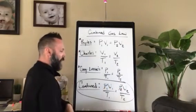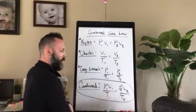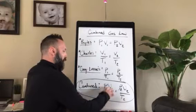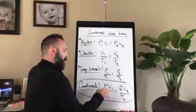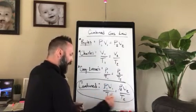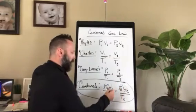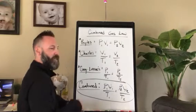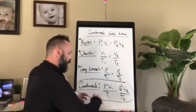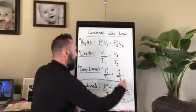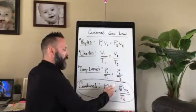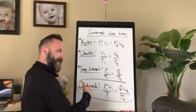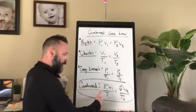If pressure is held constant, we're left with Charles's law: V1/T1 = V2/T2. If volume is held constant, we get rid of volume and we're left with P1/T1 = P2/T2. If temperature remains constant, we get rid of temperature and we're left with Boyle's law: P1V1 = P2V2.